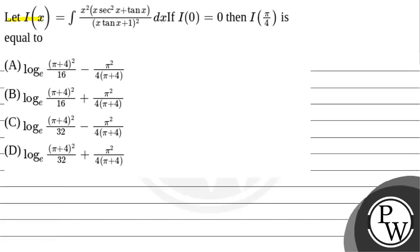Hello, let us read this question. Let i(x) equal the integration of x squared times (x squared times x plus tan x) upon (x·tan x plus 1) whole square dx. If i(0) equals 0, then i(π/4) is equal to: option A: ln(π+4)² by 16 minus π² upon 4·(π+4); option B: ln(π+4)² upon 16 plus π² upon 4·(π+4); option C: ln(π+4)² upon 32 minus π² upon 4·(π/4); option D: ln(π+4)² upon 32 plus π² upon 4·(π+4).